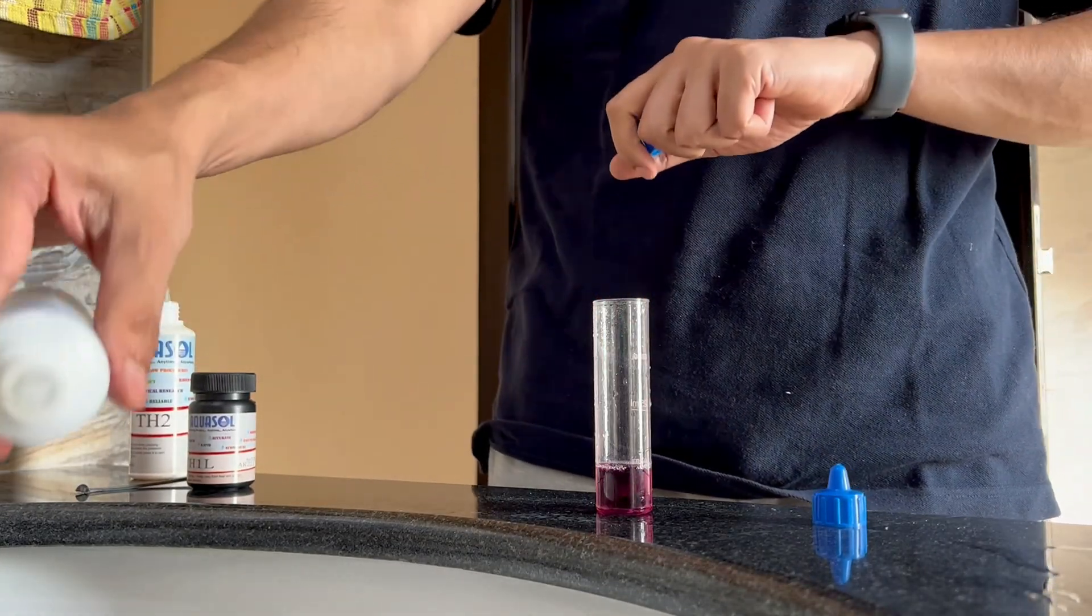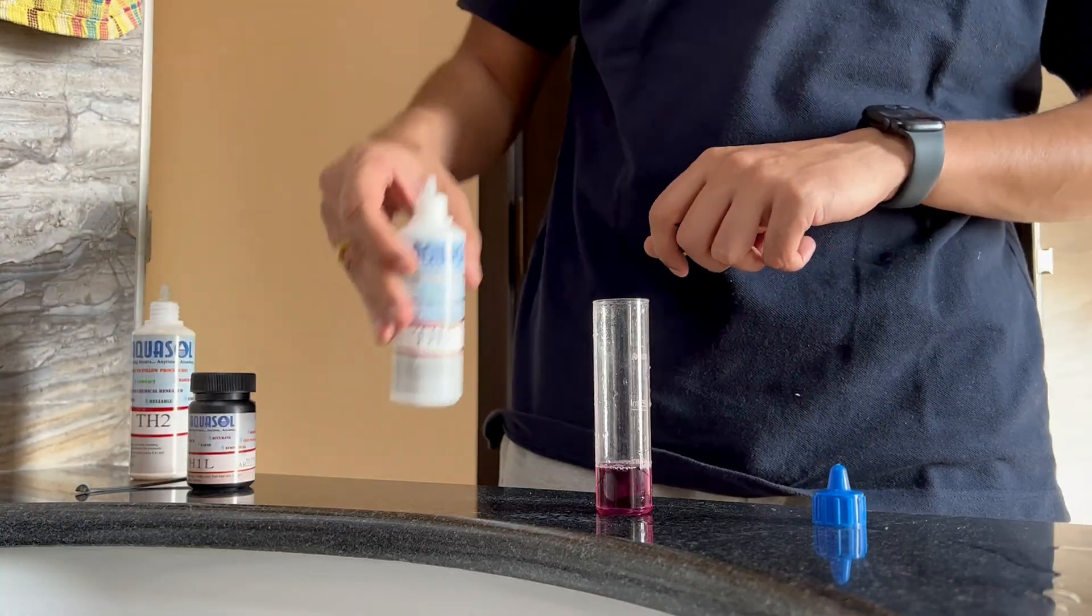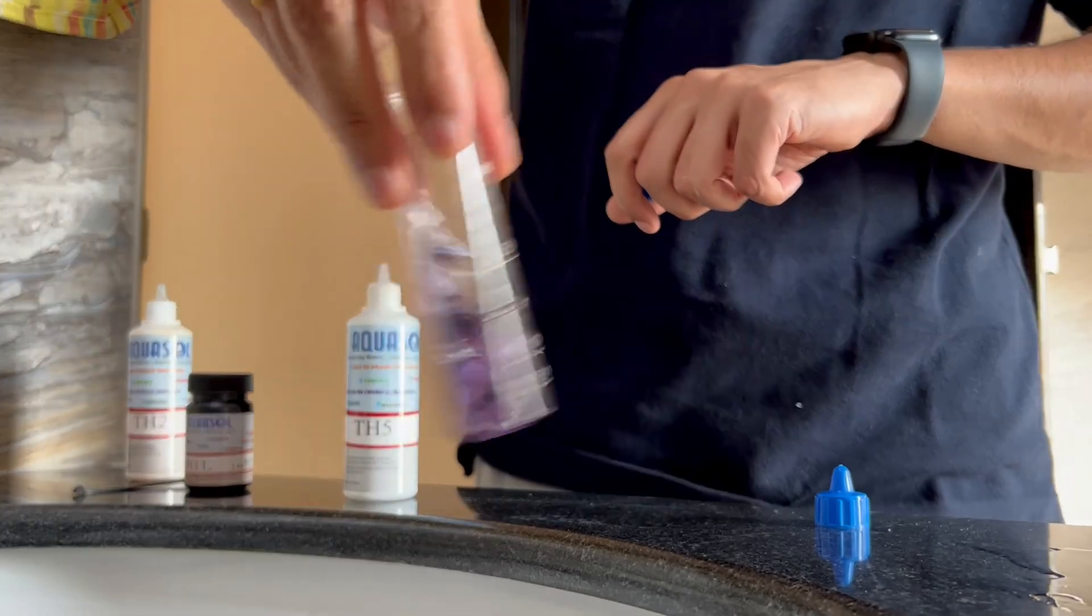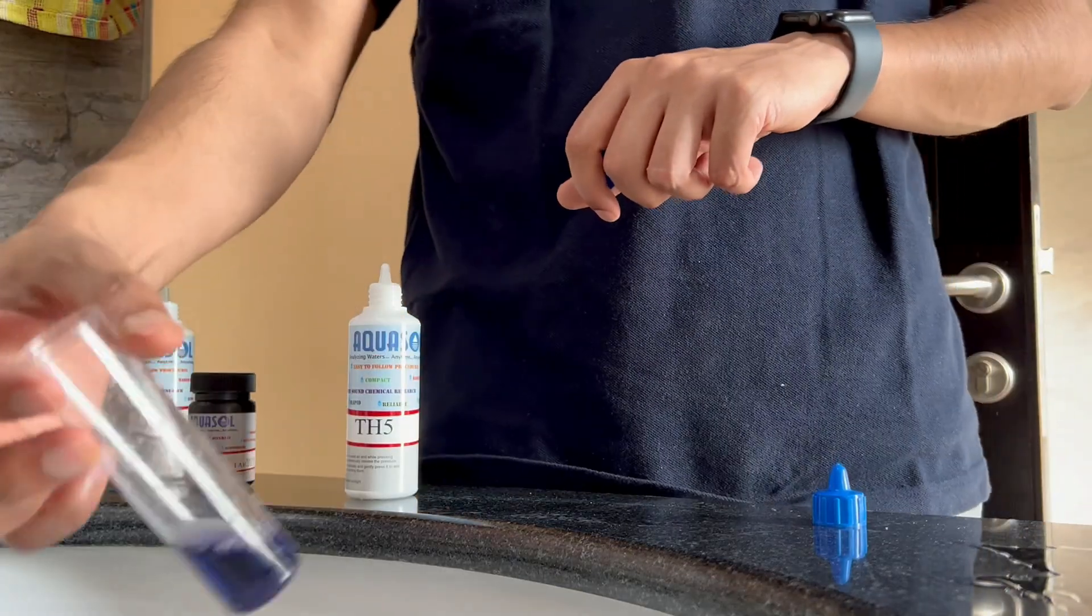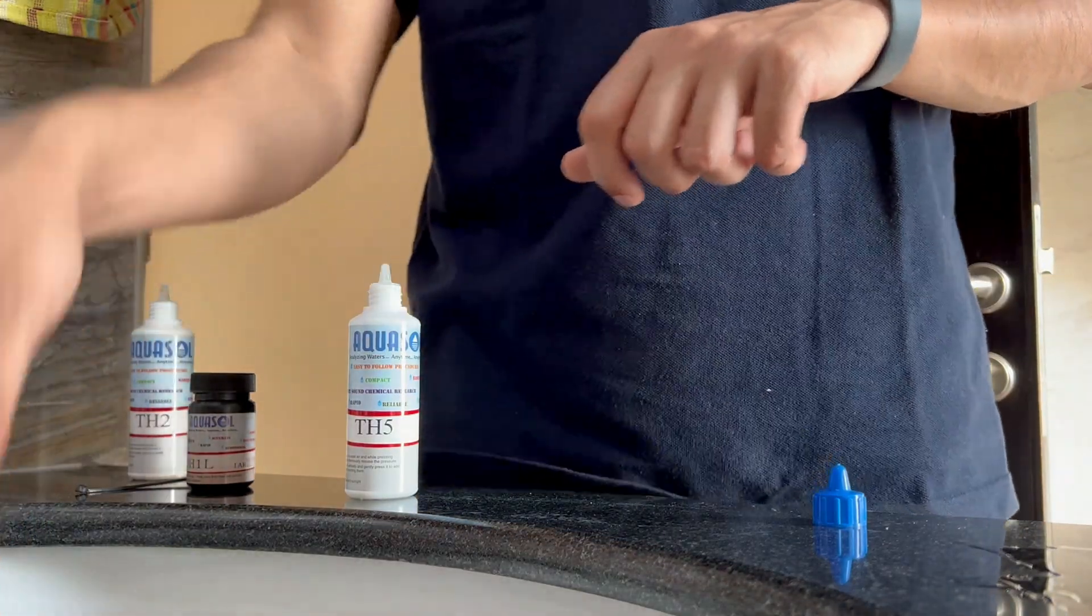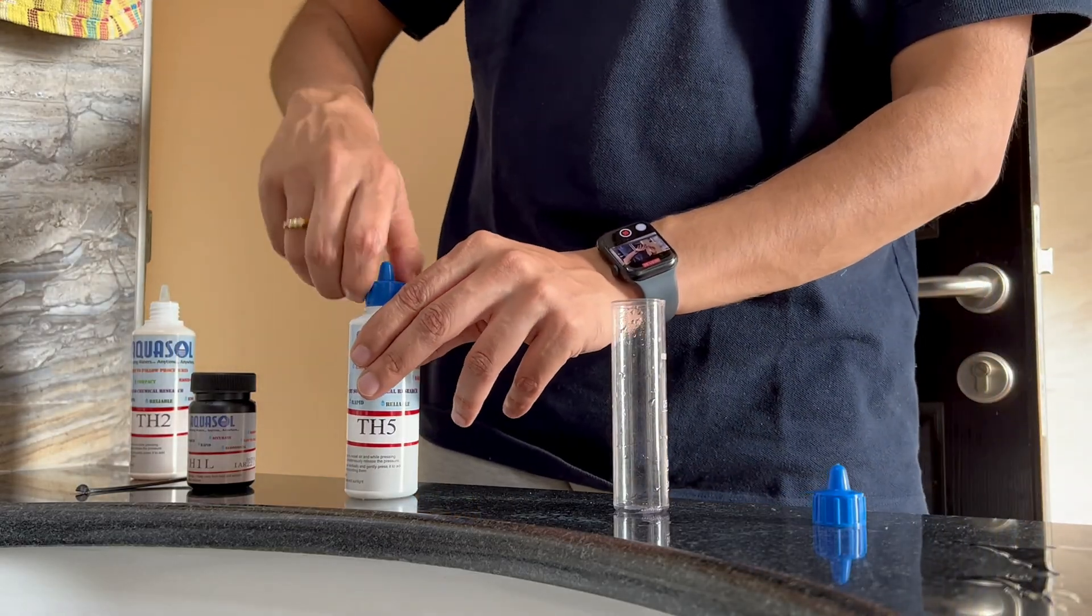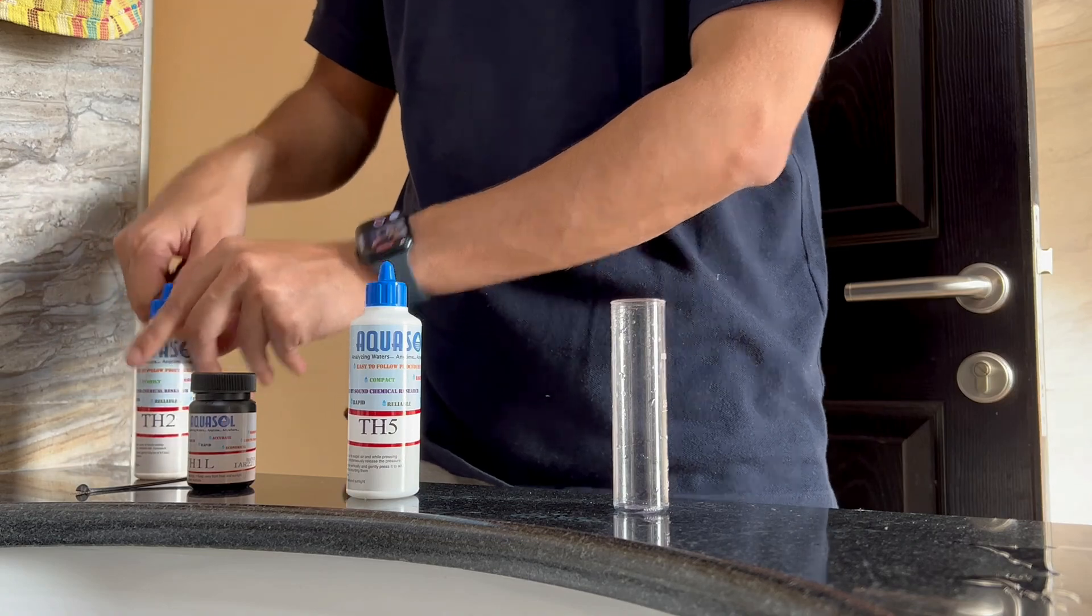TH5, one drop is equal to 25 ppm of hardness so I'll put one drop, mix it well, and there you see the water turns to blue. So the hardness is 25 or less at the moment, reduction from 750 and that's a big reduction. The water is very good and safe and soft to use.